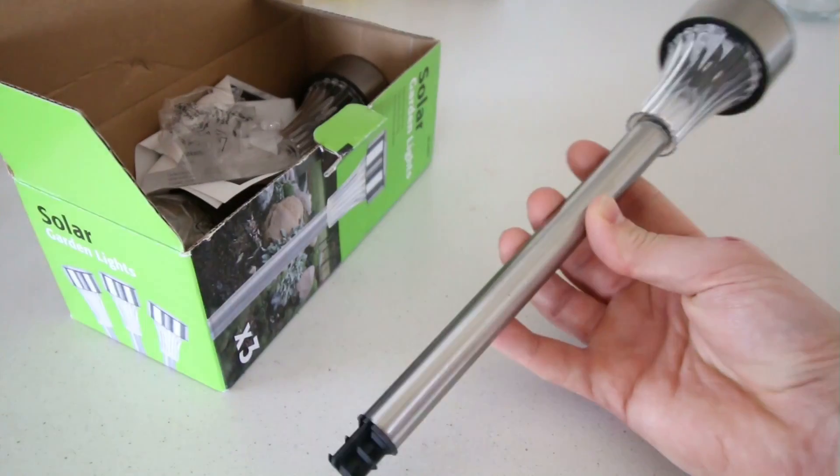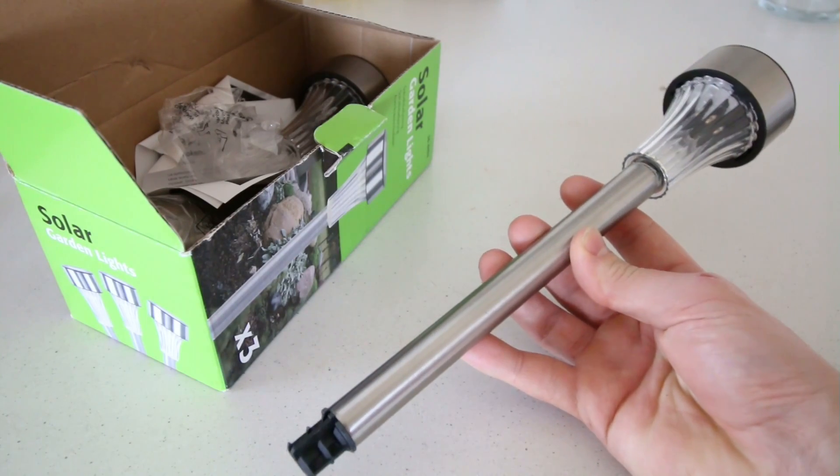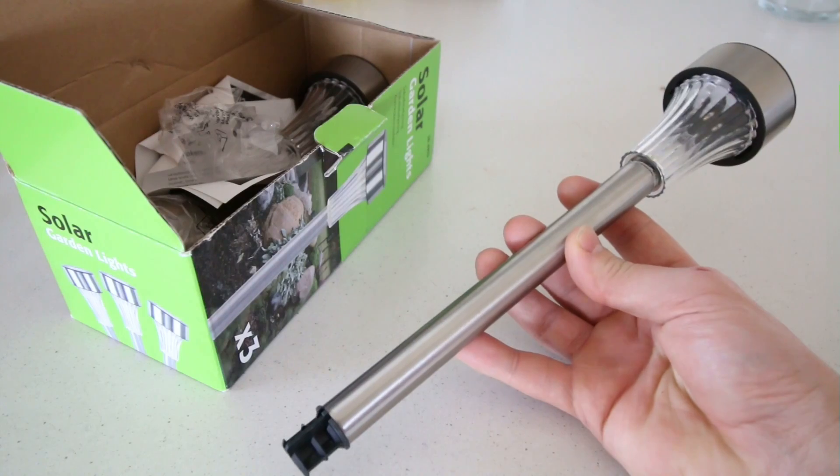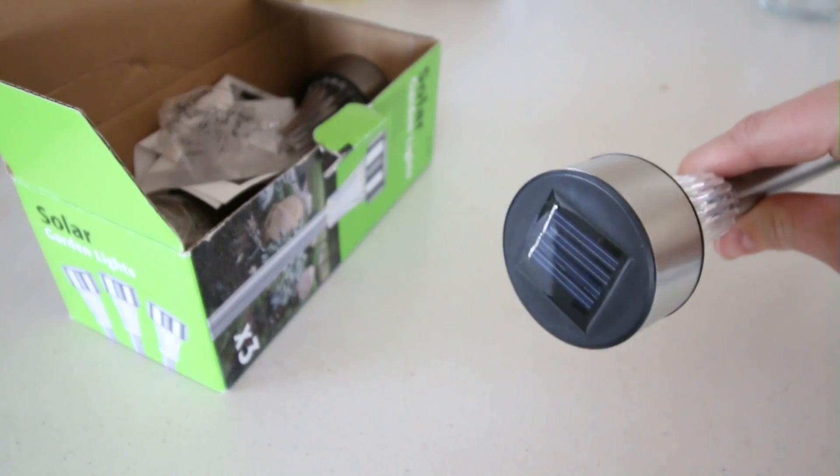So for this project, you'll need the following items. First of all, you'll need some cheap solar garden lights. I got three of these for about a pound each. They sell them at the garden centre or even the local supermarket.